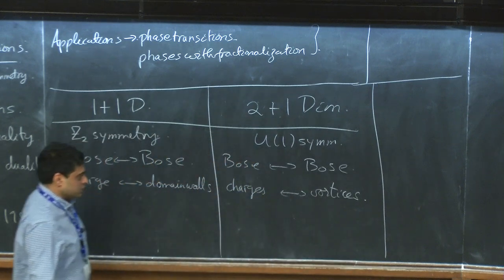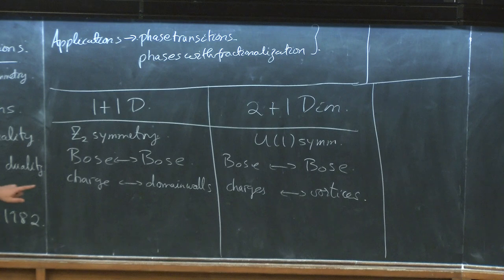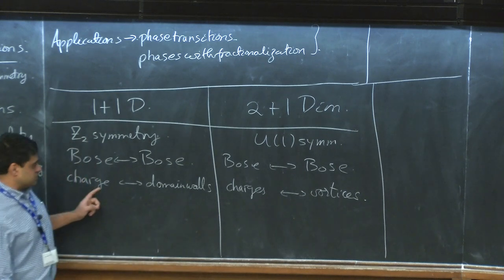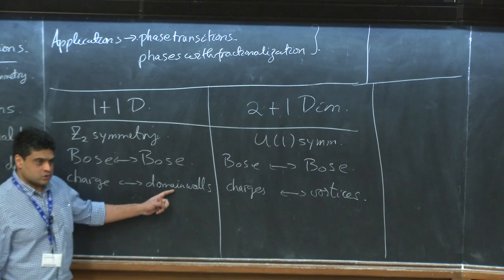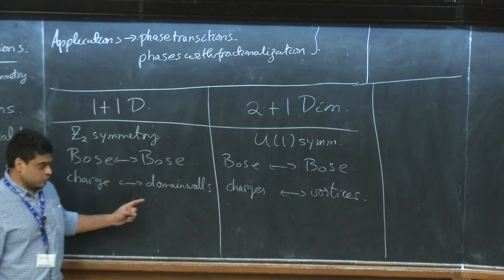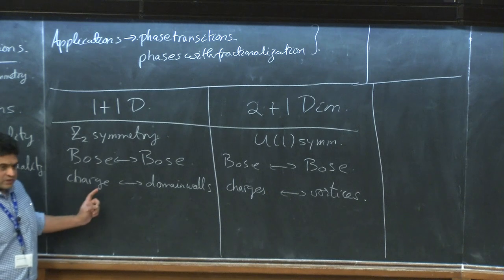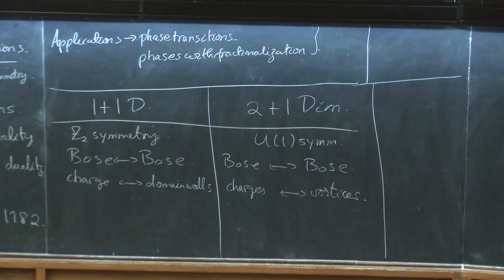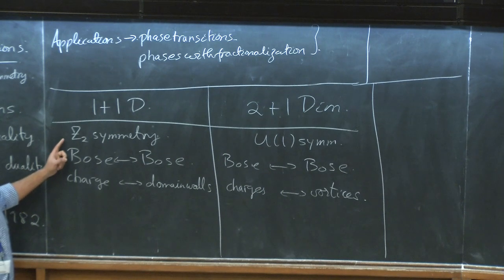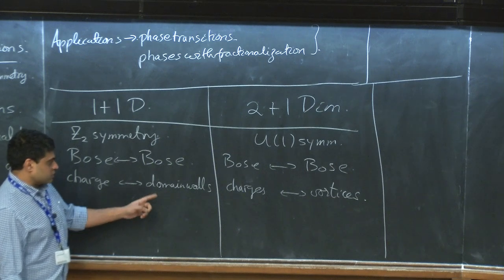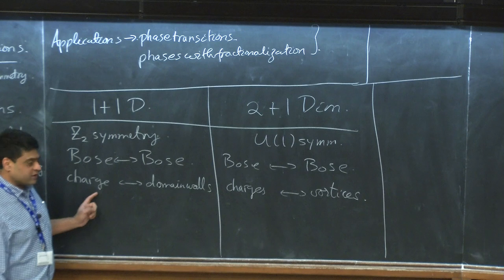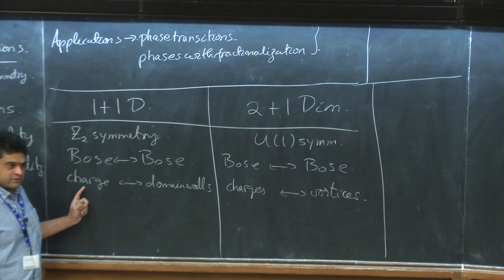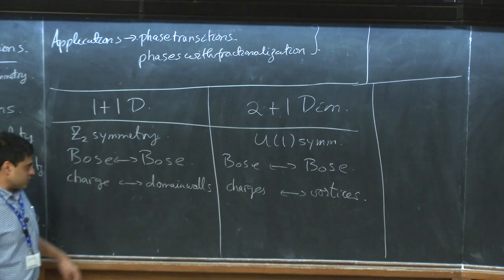One important distinction: in one dimension, the charges have short-range interactions and the domain walls also only interact at short distances. Part of why we got a perfect duality had to do with the specific model — the Ising model with just nearest-neighbor couplings. You could look at a more general model with just the symmetry, and you can still do this duality, but they won't look exactly the same. Morally speaking, they're both described by very similar theories — in both cases there are real scalar fields with short-range interactions.